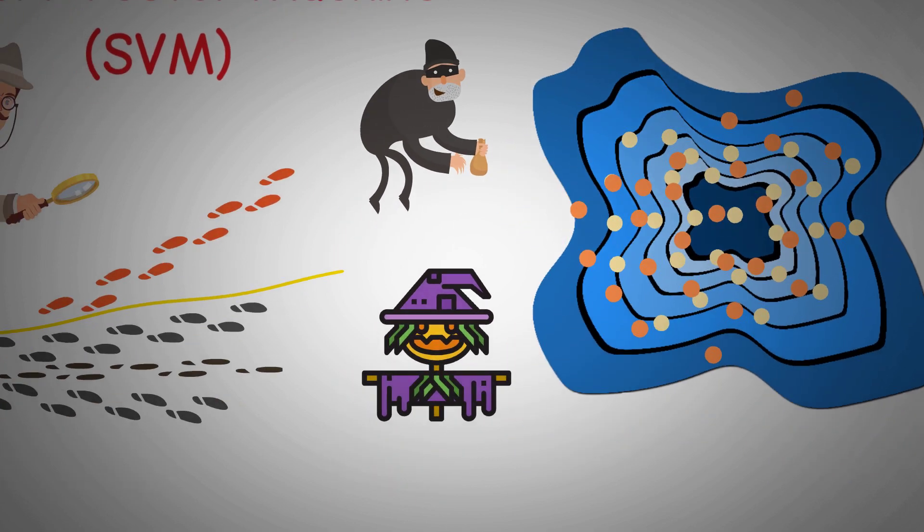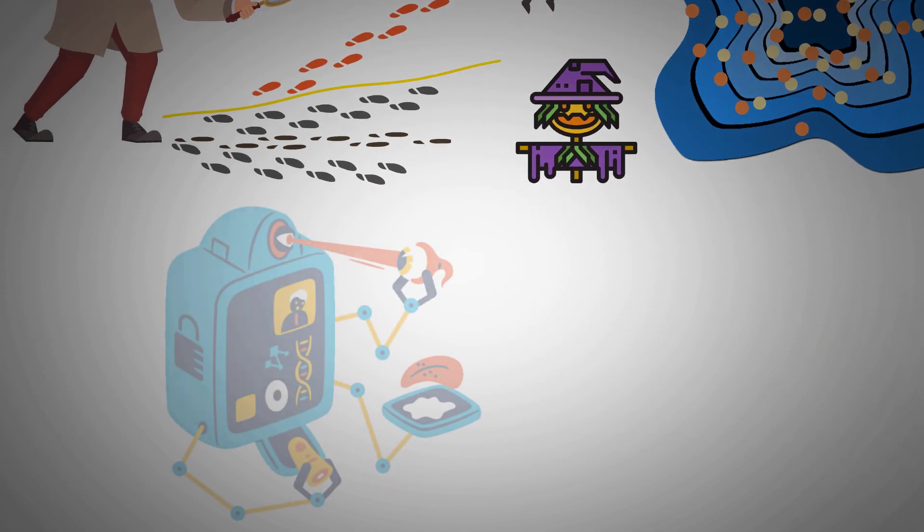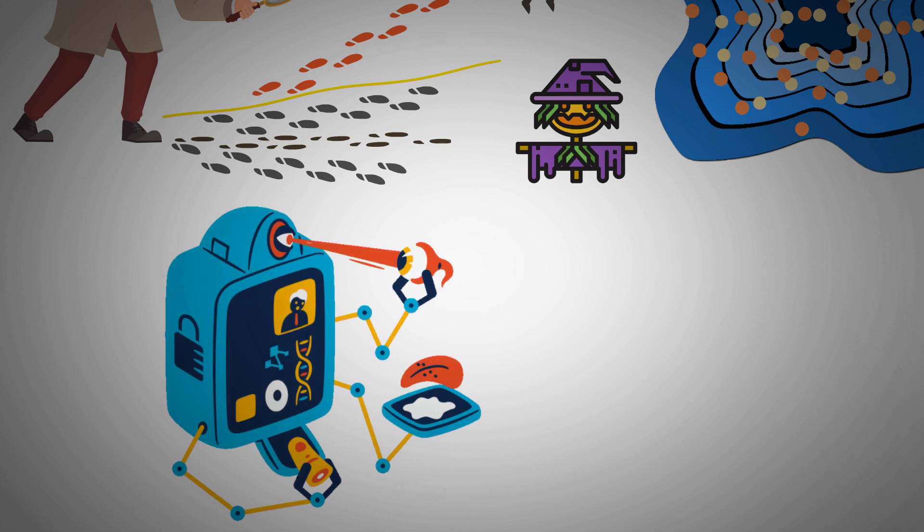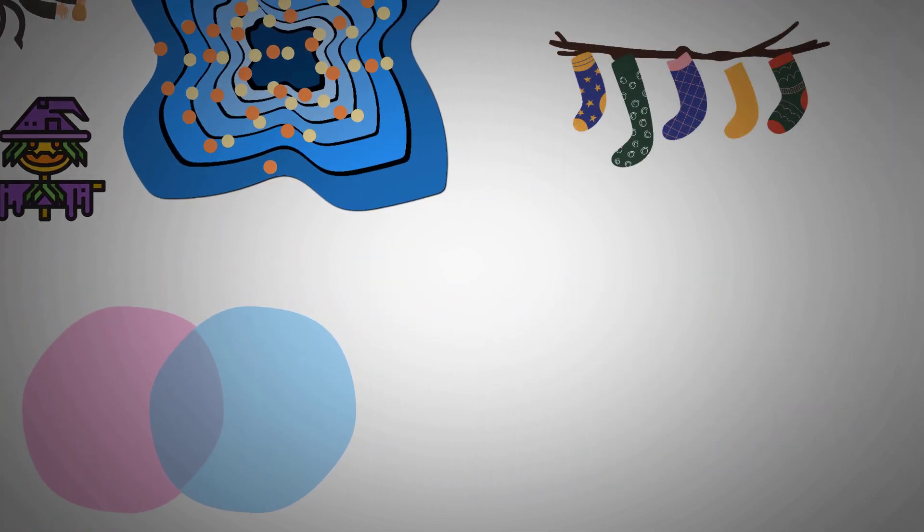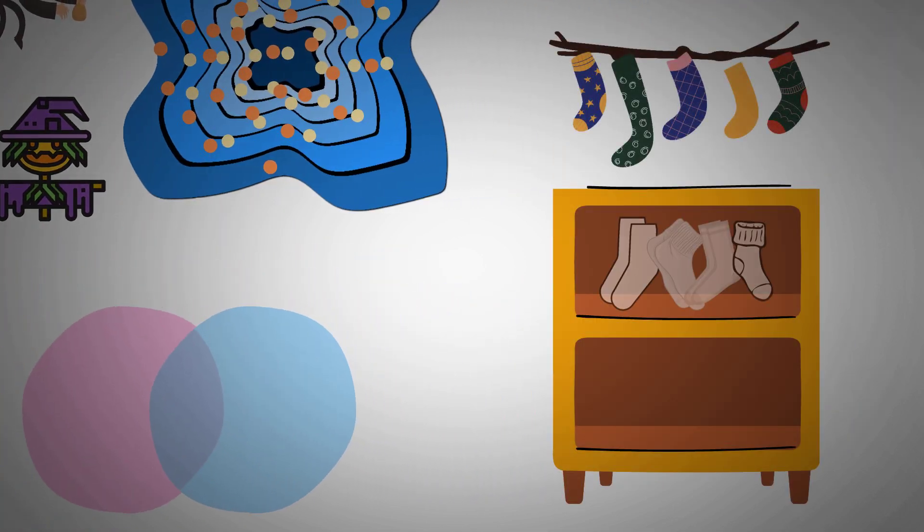At its core, an SVM is a type of machine learning algorithm that helps computers learn how to classify data into different categories. Picture it like sorting socks. You want all your white socks in one drawer and all your colored socks in another. The SVM helps decide the best way to draw the line that splits these categories apart.